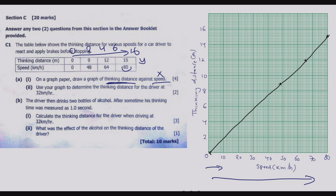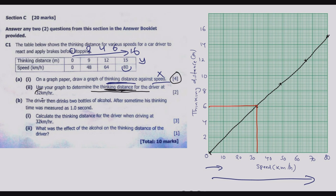Once you have done that you have earned the four marks for part (i). Moving to part (ii): we use our graph to determine the thinking distance at 32 kilometers per hour. Come to 32 on the x-axis, draw a vertical line to meet the graph, then draw a horizontal line across to the y-axis. The thinking distance reads as 6 meters.